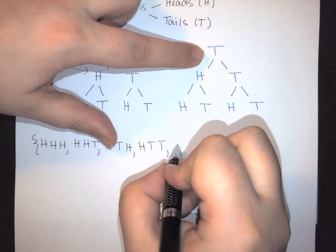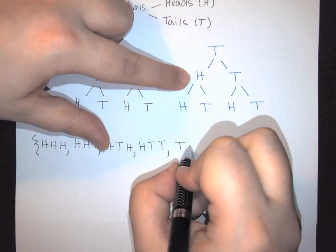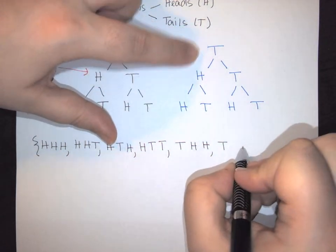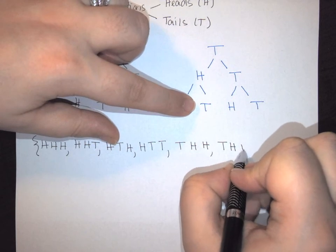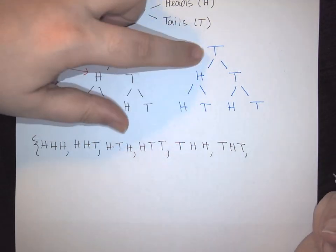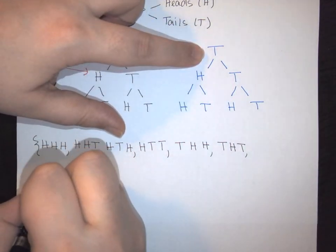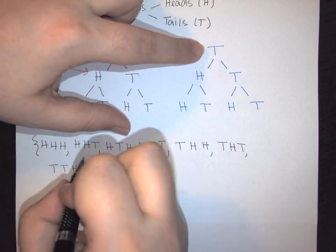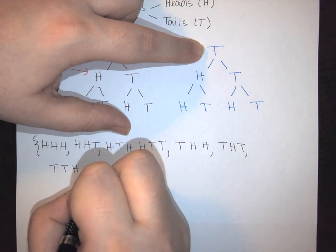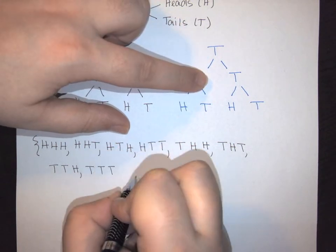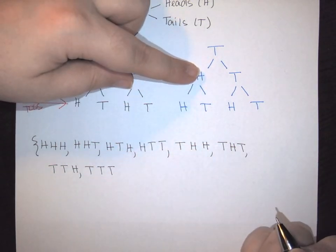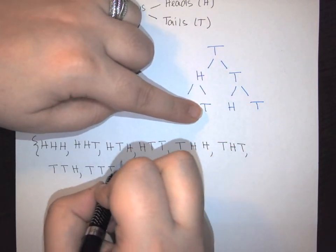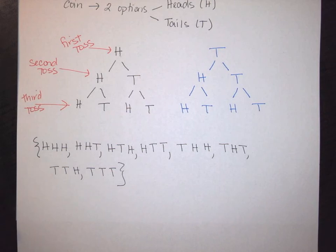Now moving to the second tree where the first toss is tails: tails-heads-heads, tails-heads-tails, tails-tails-heads, and finally tails-tails-tails. We've exhausted all possibilities, so we can close our sample set with a closing brace.